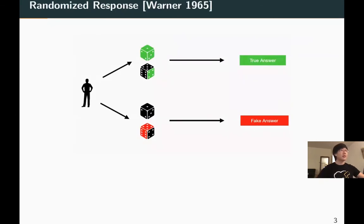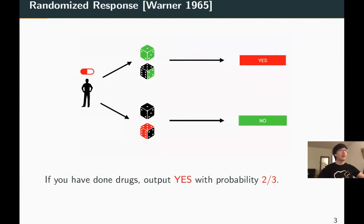One well-known privacy protection scheme is randomized response, proposed by Warner in 1965. When a user comes, he or she will throw a dice. If the outcome is 1 to 4, they give the true answer. If the outcome is 5 or 6, a fake answer is given. If you have done drugs, you output yes with probability two-thirds. If you have not done drugs, you output yes with probability one-third.